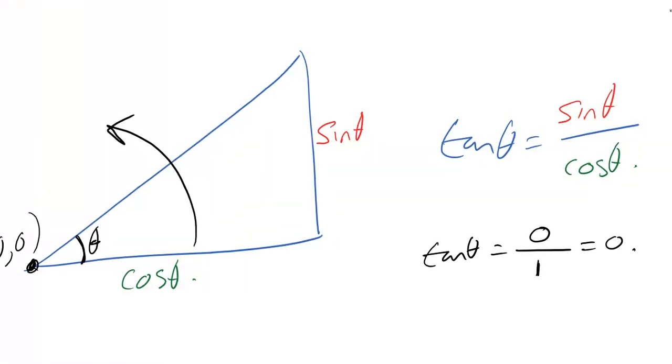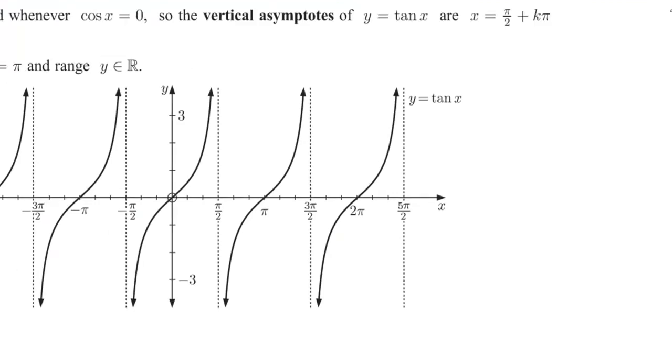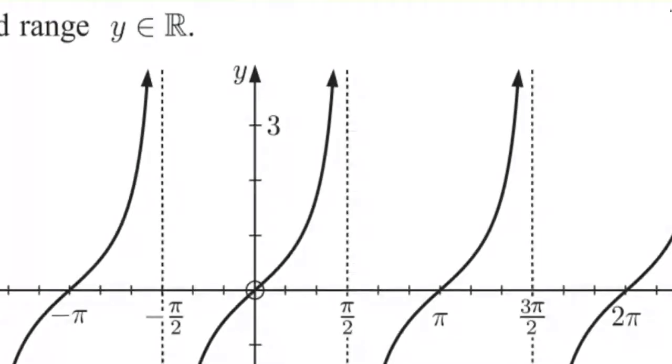It's going to go up and that is exactly what the diagram looks like. We start at zero here and as we go closer and closer to pi over 2 or 90 degrees, it goes up and up and up.